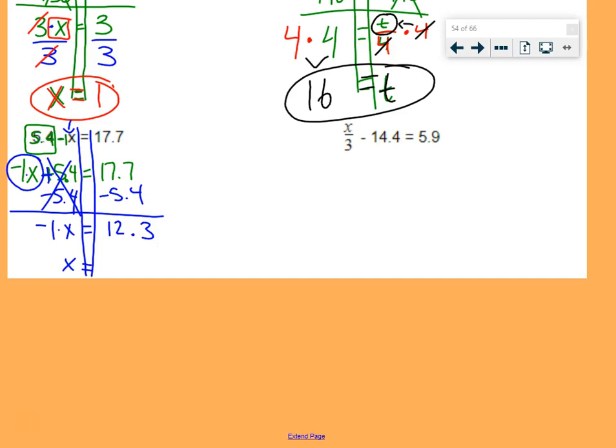Now, since this is a negative 1x, we do need to get rid of that negative 1 because we want x to be positive, not negative. Negative 1 times x, we can undo that by dividing by negative 1 on both sides. Negative 1s cancel out, leaving us with x equals 12.3 divided by negative 1 is just negative 12.3.